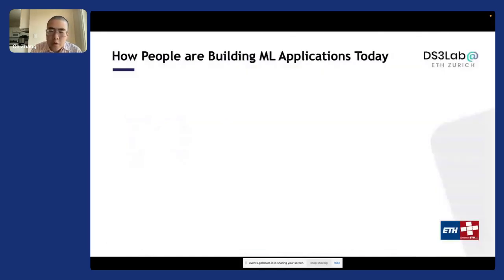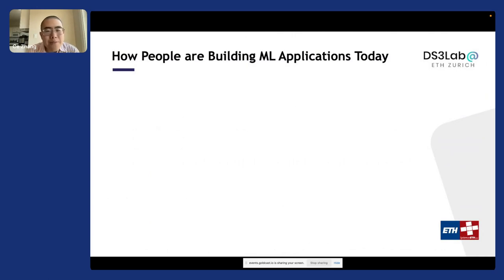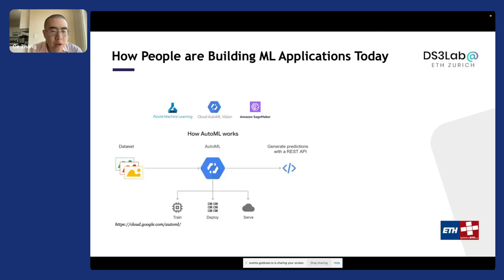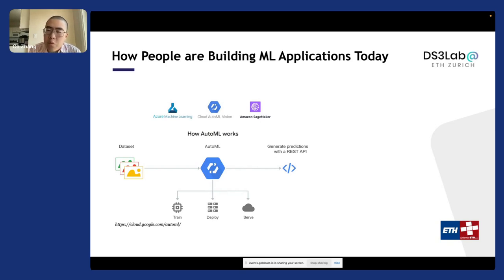What motivates our study? If you look at how people are building machine learning applications today, it has never been easier. Most cloud service providers have their AutoML platforms. For example, with Google, you can just drag and drop your data, and the system produces a model for you. It has never been easier to get a machine learning model from a cloud service provider.